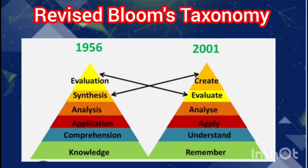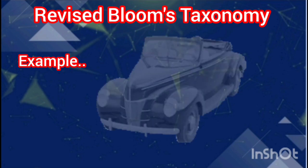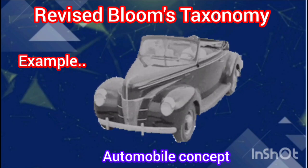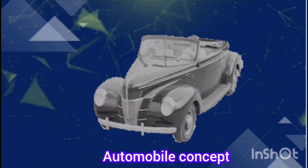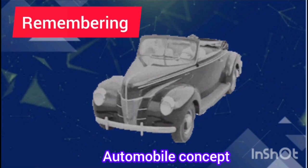I would like to explain this Revised Bloom's Taxonomy with an example. Suppose I am taking a class on automobile concepts. In the automobile concept, I introduce the motor car. When I say motor car, students immediately recall their experiences of traveling in a car — that is remembering.